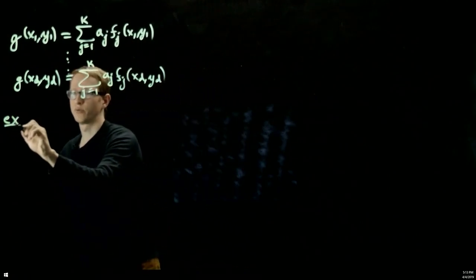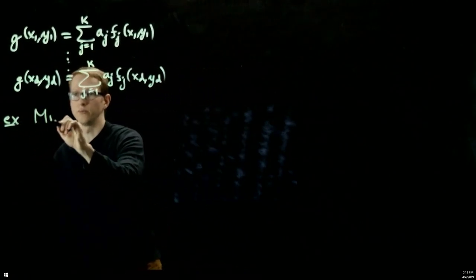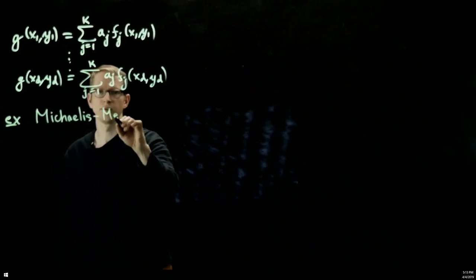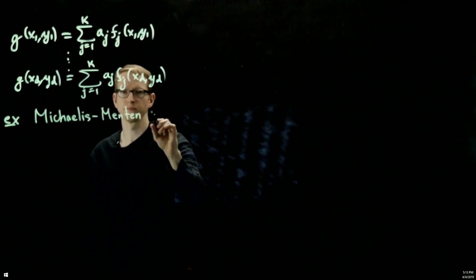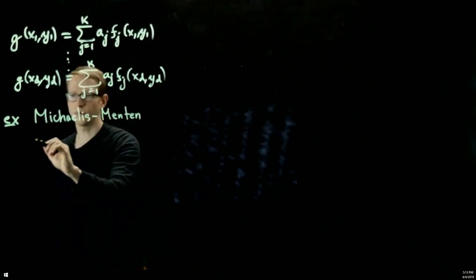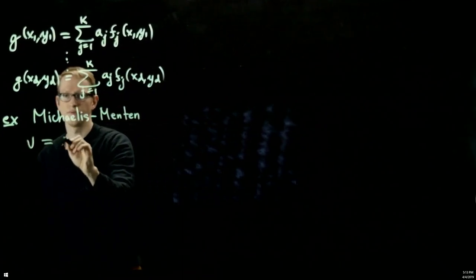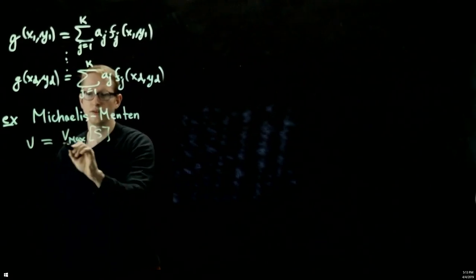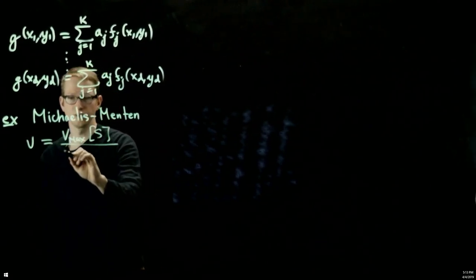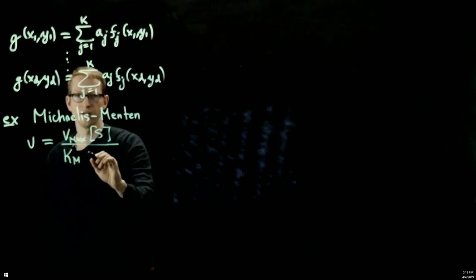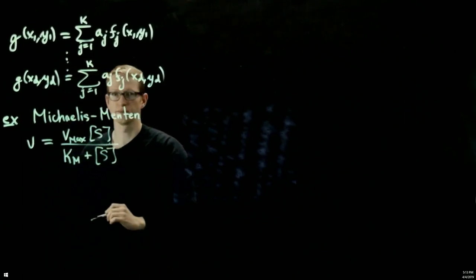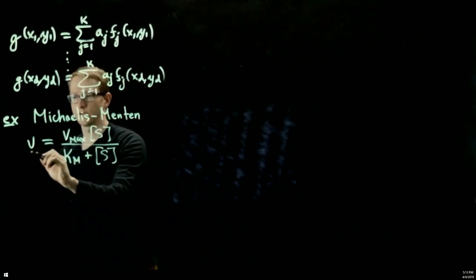Now, the example that we'll look at and work through is called the Michaelis-Menten equation. And this equation is of the form v equals vmax times s, which is the concentration of a substrate, divided by kM plus s. So this here is a function of s.